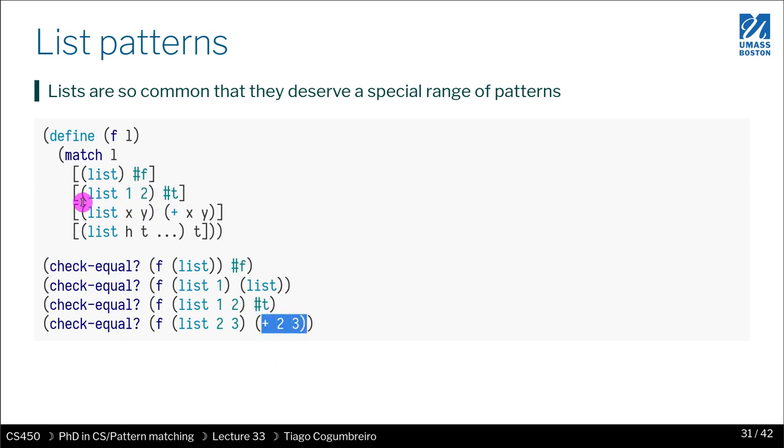So note that these two branches, they're both looking at lists with two elements, but here we're seeing specifically which elements they are. And here we're leaving that open, and we're also binding those elements of the list to variables. So as you know, this is creating variables, declaring two variables x and y.